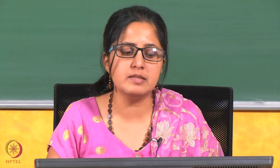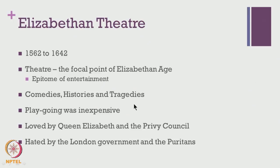The church was against it, the Puritans were against it, and the London government thought it was not a safe kind of entertainment to pursue. Nevertheless, Elizabethan drama dominated England during the 16th and even into the 17th century. There were three different kinds of genres that dominated: mainly comedies, histories, and tragedies. During this time it is very important to note that play-going was a fairly inexpensive thing to do, so many people used to crowd near the theatres to watch a play or two.